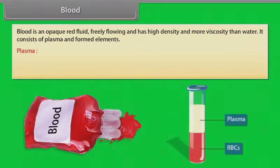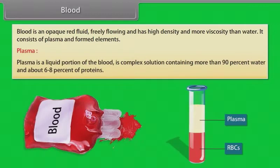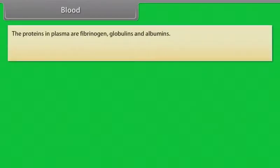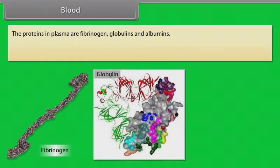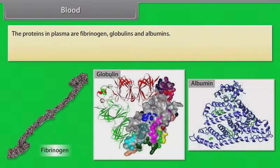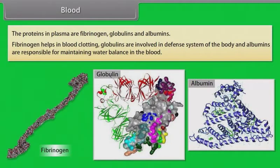Plasma is the liquid portion of blood. It is a complex solution containing more than 90% water and about 6–8% proteins. The proteins in plasma are fibrinogen, globulins, and albumins. Fibrinogen helps in blood clotting; globulins are involved in the body's defense system; and albumins are responsible for maintaining water balance in the blood.